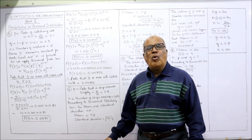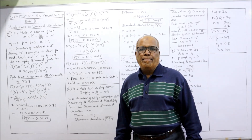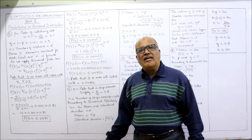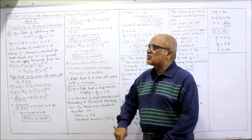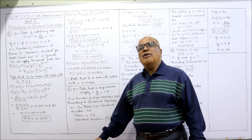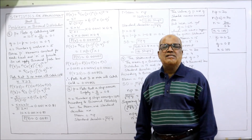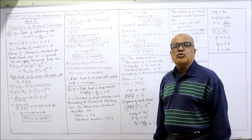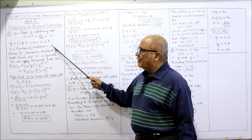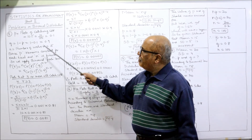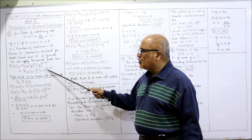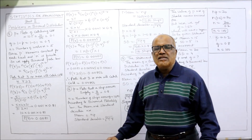Since the probability of catching cold is constant for every worker and n is finite, we apply the binomial probability law. According to the binomial probability law, P(R) = nCR × P^R × Q^(n−R). Here n = 5, so the formula becomes: 5CR × (0.1)^R × (0.9)^(5−R).